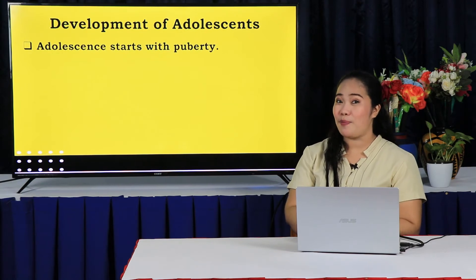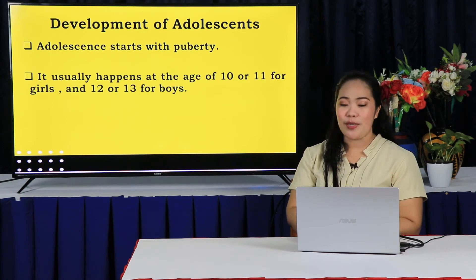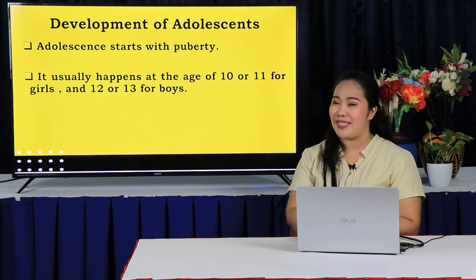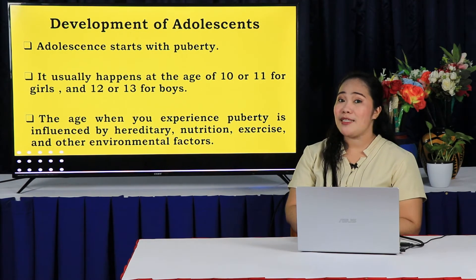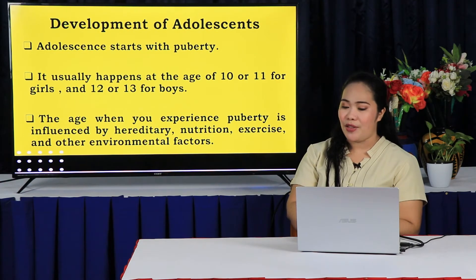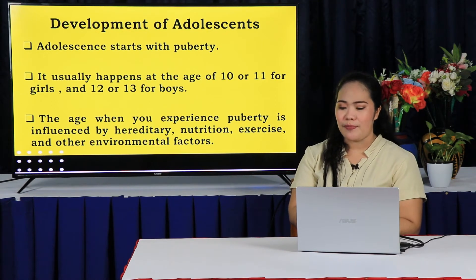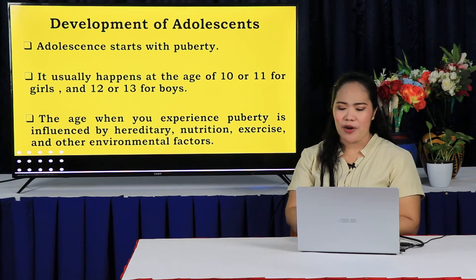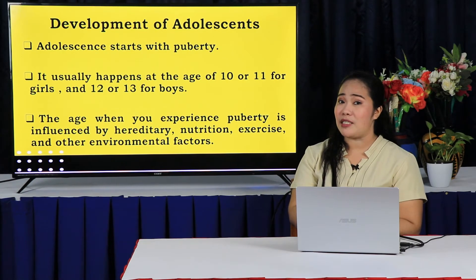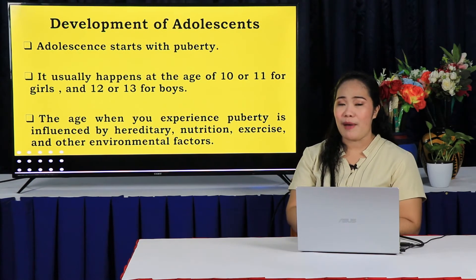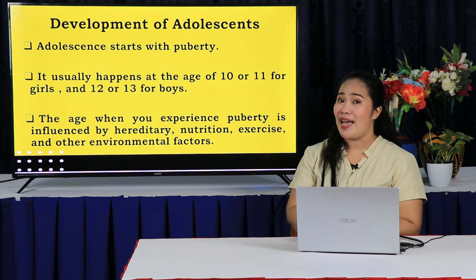Adolescence starts with puberty. It usually happens at the age of 10 or 11 for girls and 12 or 13 for boys. However, it is not true for everybody. Some adolescents experience puberty either ahead or later than others. Some have their own growth spurts earlier and some later. Still, others may experience having pimples while others may not.